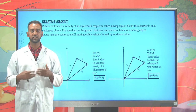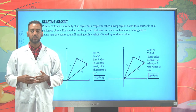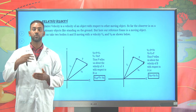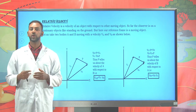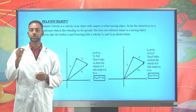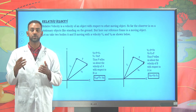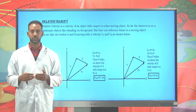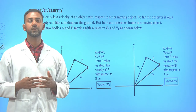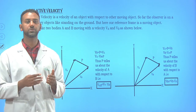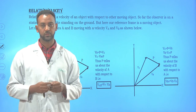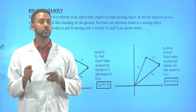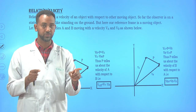Finally, let's try to see about relative velocity. Relative velocity is the expression of velocity of an object with respect to a moving object. So far, we have discussed the motion, velocity, and acceleration of something with a stationary frame of reference at the ground.